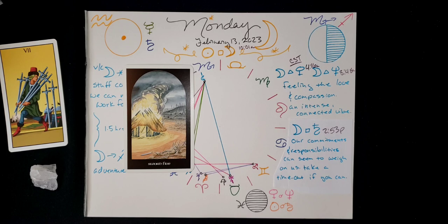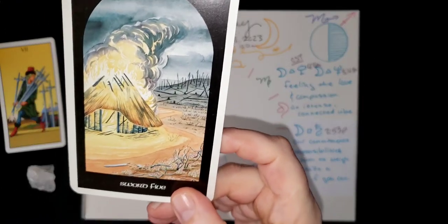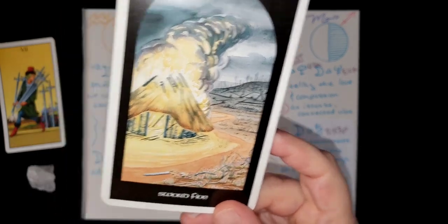Really what the five of swords is about, it is about this desire that people have sometimes to win at all costs. Going so far as to burn crops and houses, making a place completely unlivable for anybody. That's the kind of vibe that goes into being a five of swords state of mind where you've got to win.